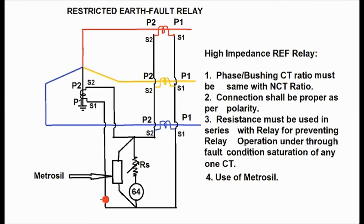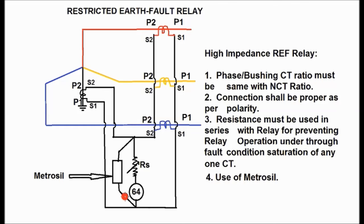For the secondary side formation: S1 of the neutral CT is connected together with S1 of all the phase CTs. S1 of the red, yellow, and blue phase CTs are shorted together and also shorted to the neutral CT S1, forming one terminal. S2 terminals of all the bushing CTs and the neutral CT are shorted together to form another terminal, and these two terminals are taken by cable to the control and relay panel.